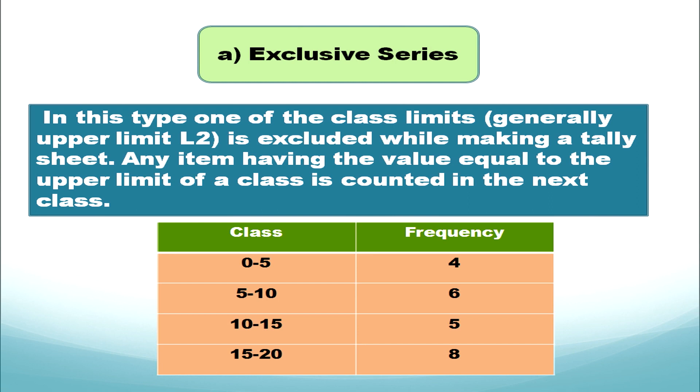Let's verify these three features with an example: 0 to 5, 5 to 10, 10 to 15, 15 to 20. We observe that the upper limit of one class is the next lower limit, the class interval gap is the same, and the value of 5 in the first class will not be included — it moves to the next class.